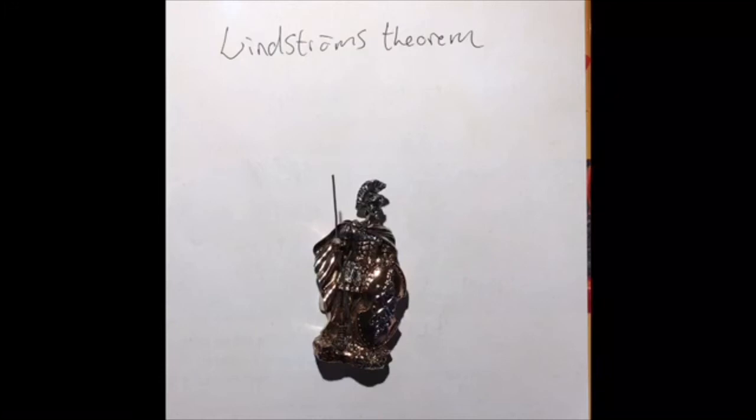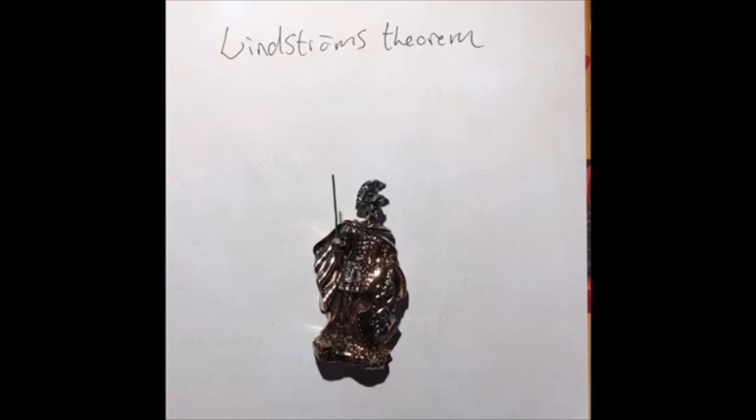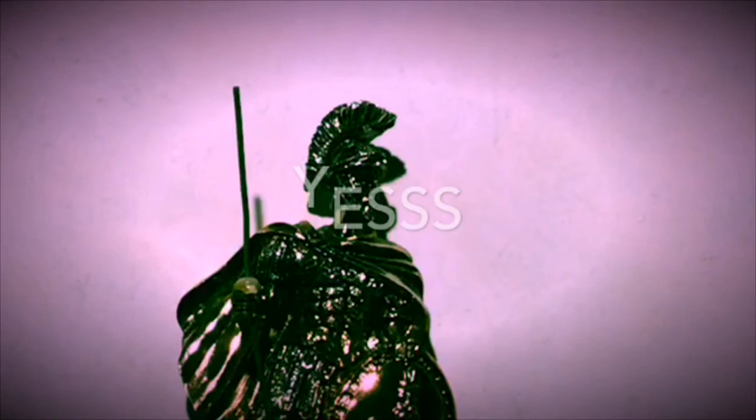To state Lindström's theorem in its most general form, we consider a weak version of the compactness property. Let k be a cardinal. An extension of first-order logic is said to have compactness number k if for any set gamma of sentences of the logic, if the length of gamma is less than or equal to k and every finite subset of gamma has a model, then gamma has a model.